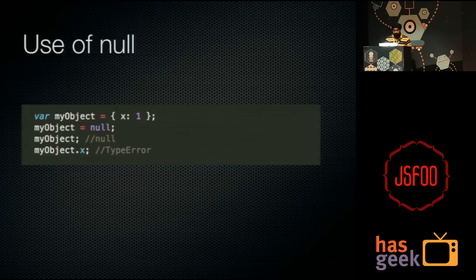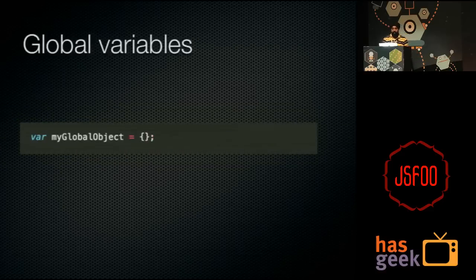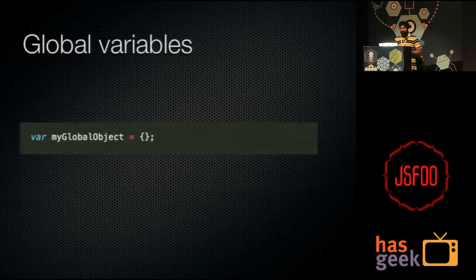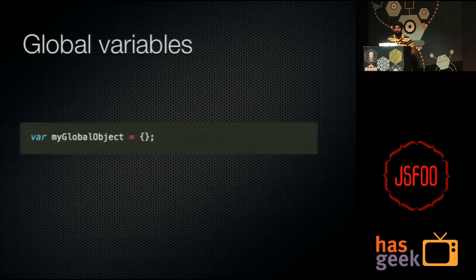Now, null: what we usually do is think an object is not needed anymore and assign null to it. But again, if that object is being referenced by any other variable, it will never be garbage collected — it will just keep it in memory as null. Then you have global variables. Global objects will never be garbage collected until the page refreshes or we navigate to a different page. We should always try to enclose variables inside functions so they can be garbage collected as soon as function execution ends. We should try to minimize the use of global variables.